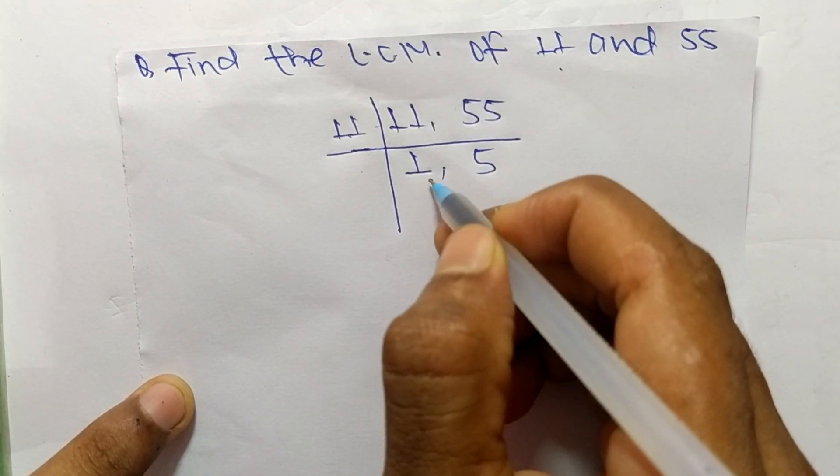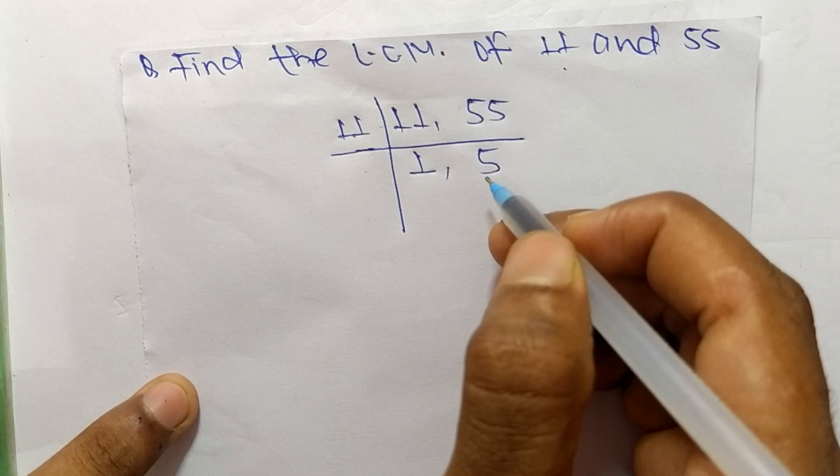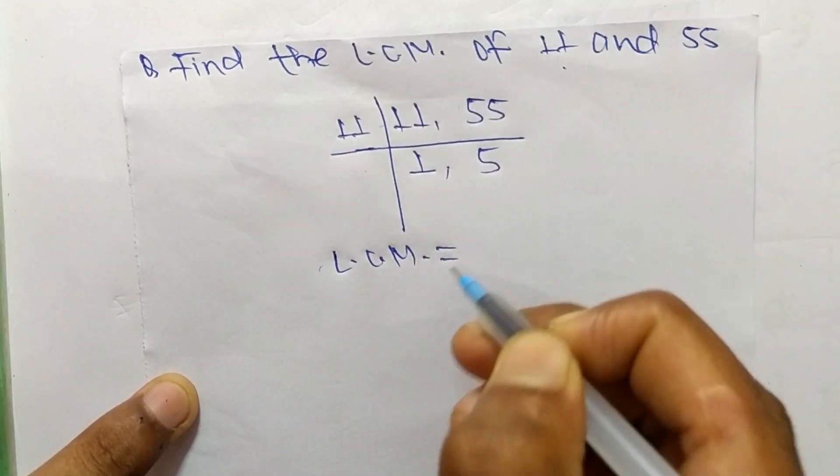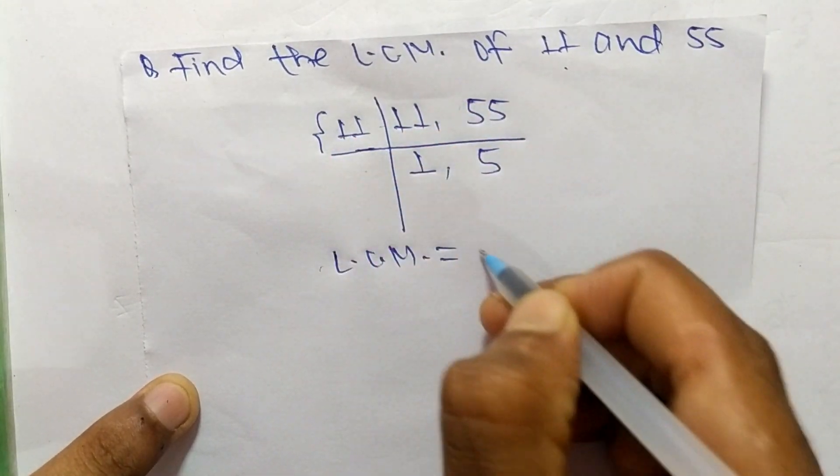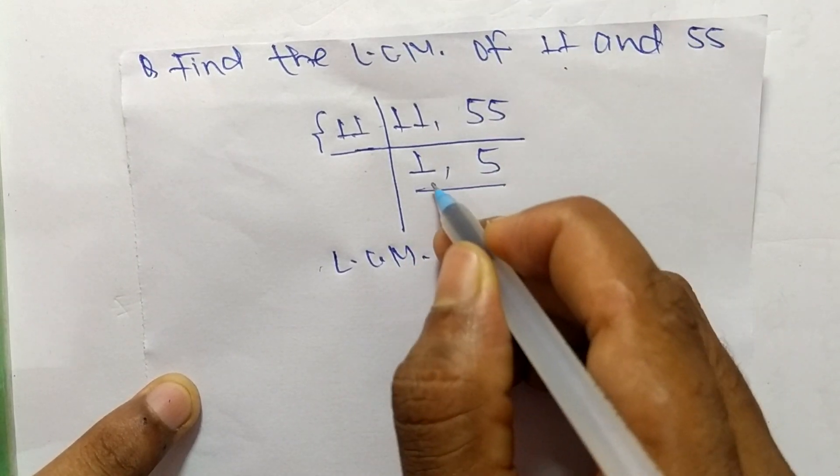Now we get 1 and 5, which are not exactly divisible by the same number. So the LCM equals, from this part, 11, and from this part we have 1 and